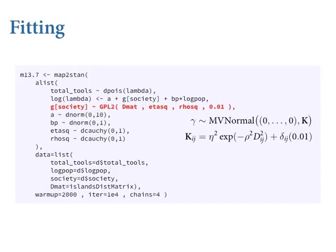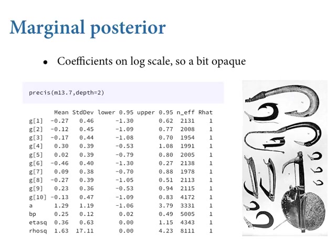The jigger part doesn't matter much, especially if you've got another variance parameter somewhere in the model because that'll soak it all up. So be careful about identifiability too. We've only added two parameters to model this 10-by-10 covariance matrix, so it's not parametrically very rich. The gamma coefficients are the offsets — the continuous category Gaussian process equivalent of varying intercepts for each of the 10 island societies. It's hard to interpret these directly because they're on the log scale, the log count scale.